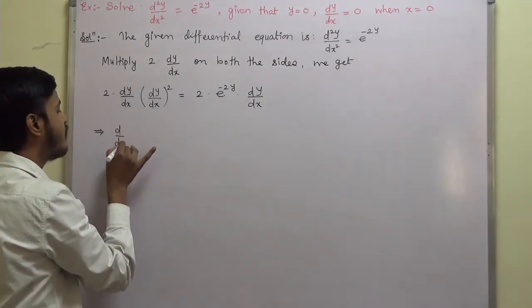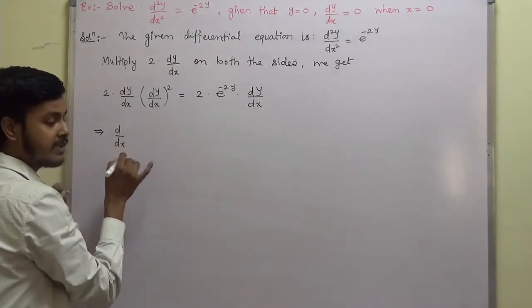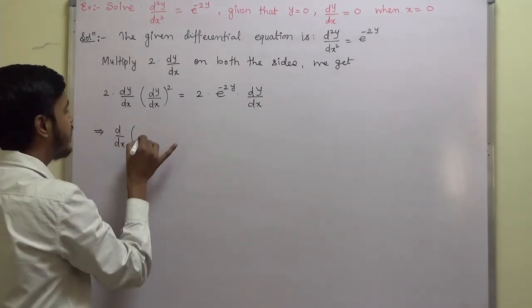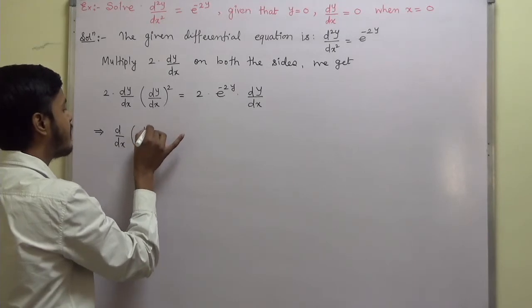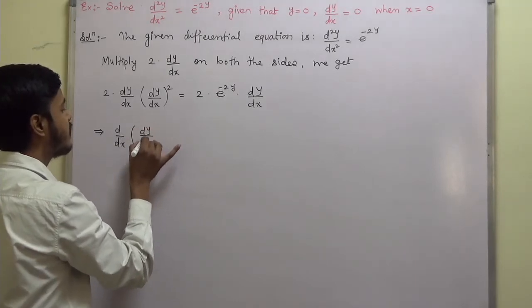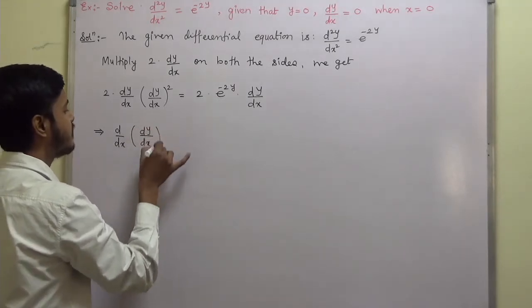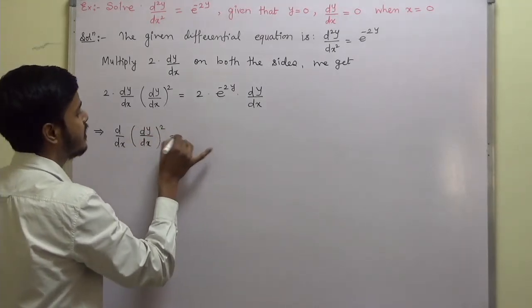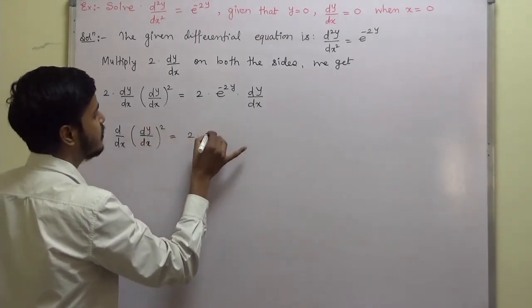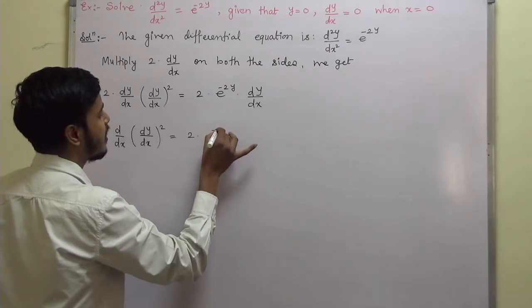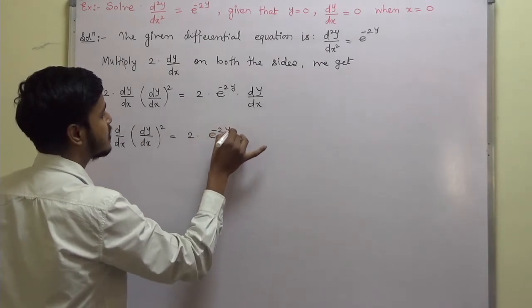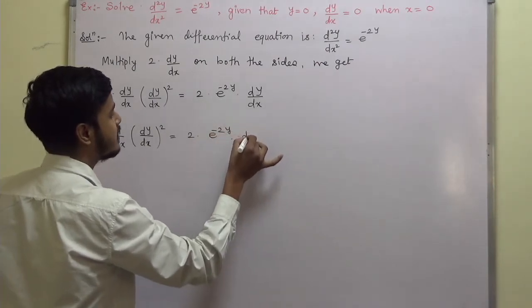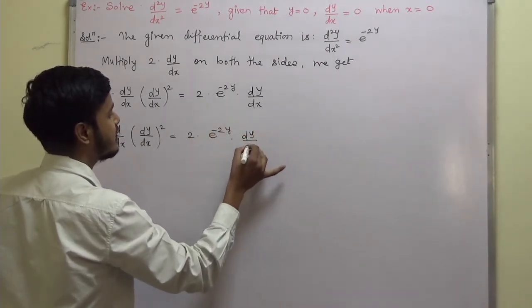This is nothing but d/dx of (dy/dx)² = 2·e^(-2y)·(dy/dx).